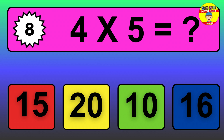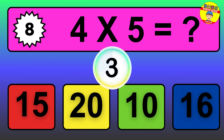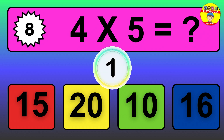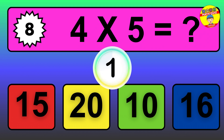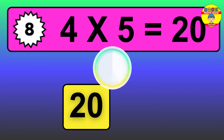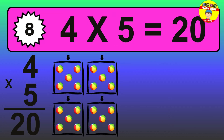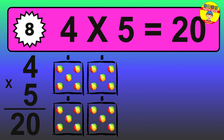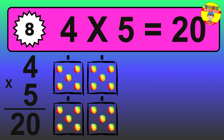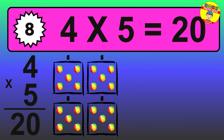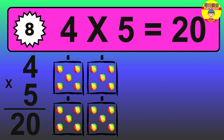Question 8. 4 times 5 equals what? The answer is 4 times 5 is 20. To calculate, we have 4 groups with 5 balls each one. So, how many balls do we have? 20 balls.